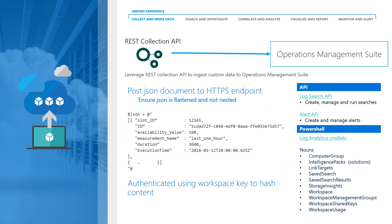The REST Collection API takes custom data from applications, servers, and services that work with REST APIs and uses JSON document formats to pull that information in. As long as you can get it into JSON format in the standardized structure, you can pull it into OMS and start getting insights, alerts, and notifications. The sky's truly the limit there.